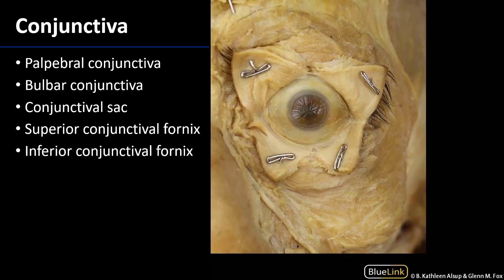Even more superficial than that outer fibrous layer, we have anteriorly a conjunctiva. The conjunctiva is a mucous membrane which lines the interior of the eyelids as well as the anterior of the eye itself. There are two types of conjunctiva and they are completely contiguous. There is palpebral conjunctiva — here we can see that the eyelids have been cut and reflected away, and that inner surface would all be covered by palpebral conjunctiva.